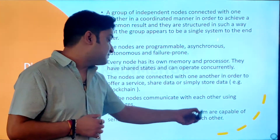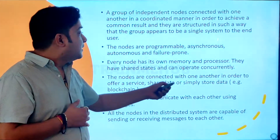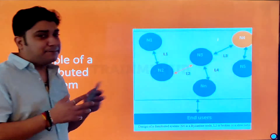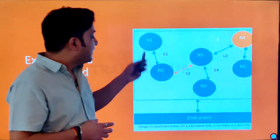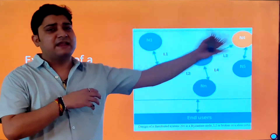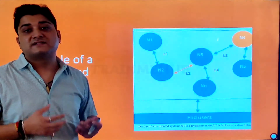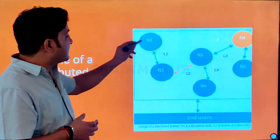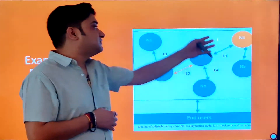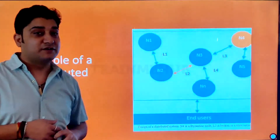All nodes communicate with each other using messages. All nodes in the distributed system are capable of sending and receiving messages to each other. Here is a common example of how nodes interact — M1, M2, M3, M4, M5 — it can be any N number of nodes connected. For any computer system, this can be a computer, a server, or any cloud nodes.